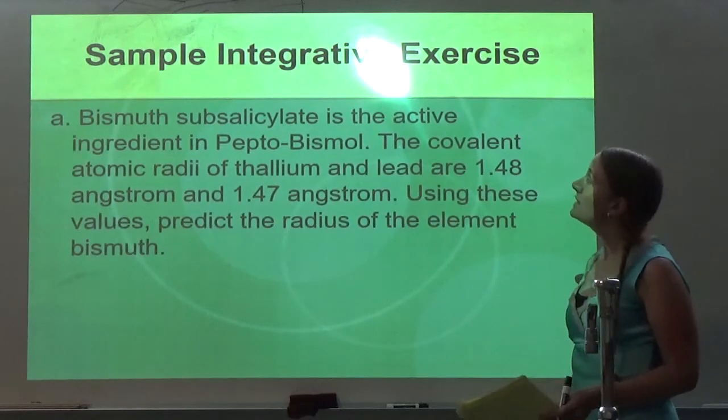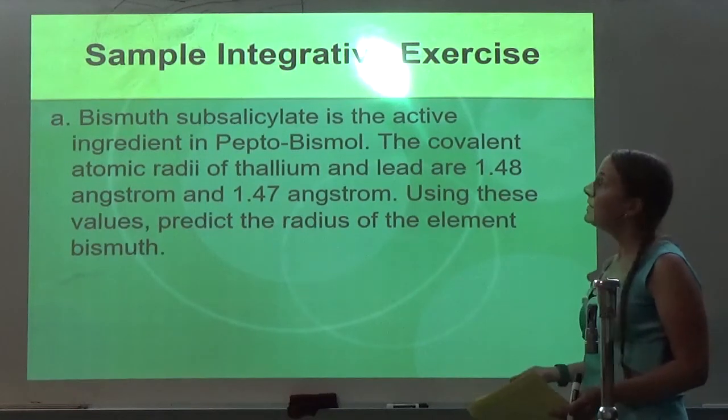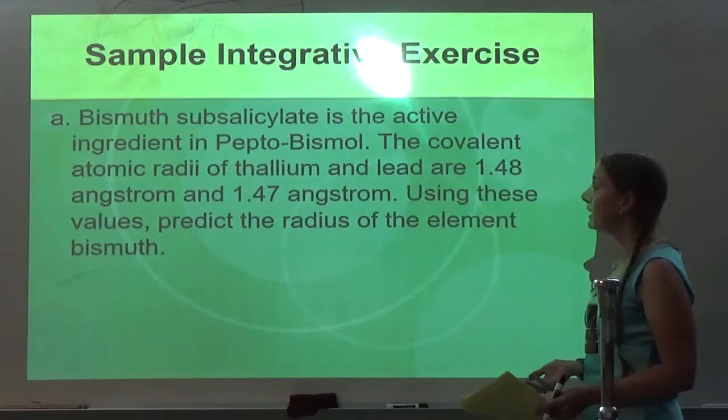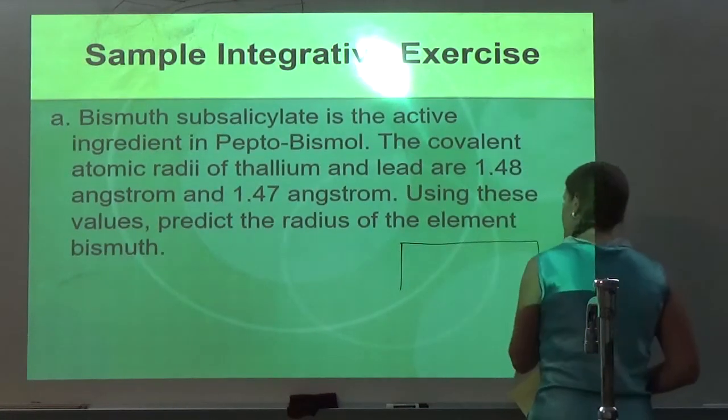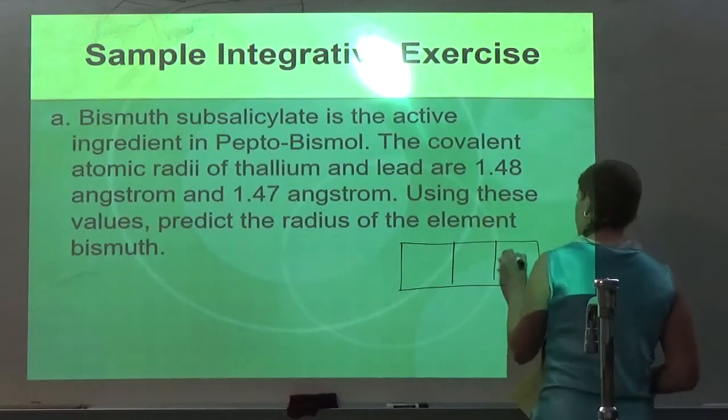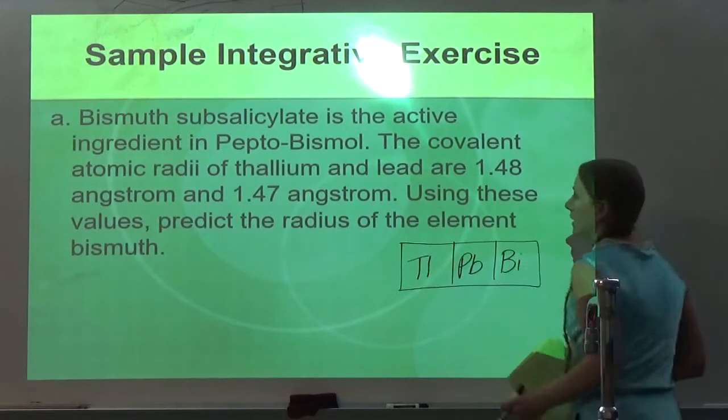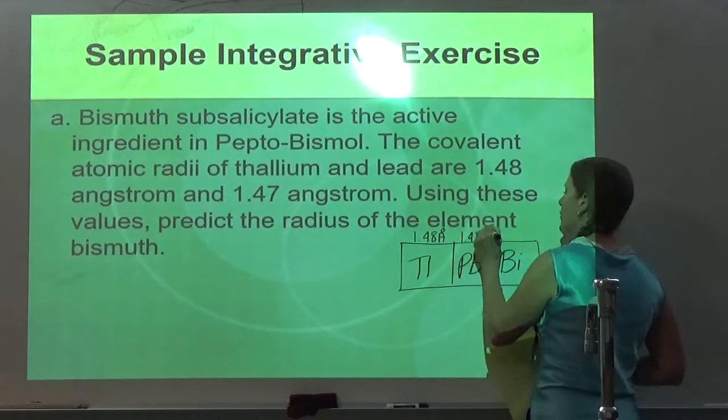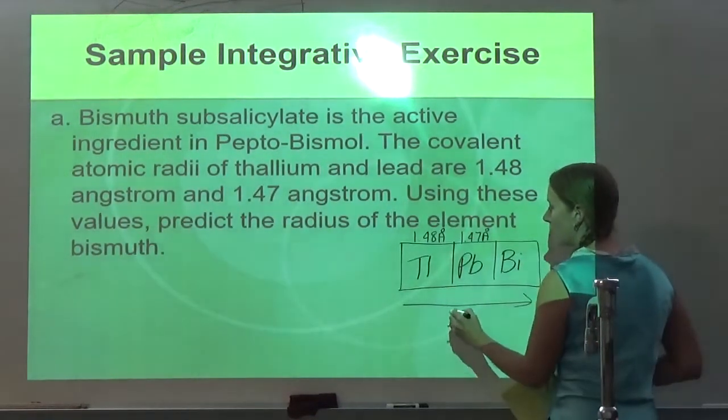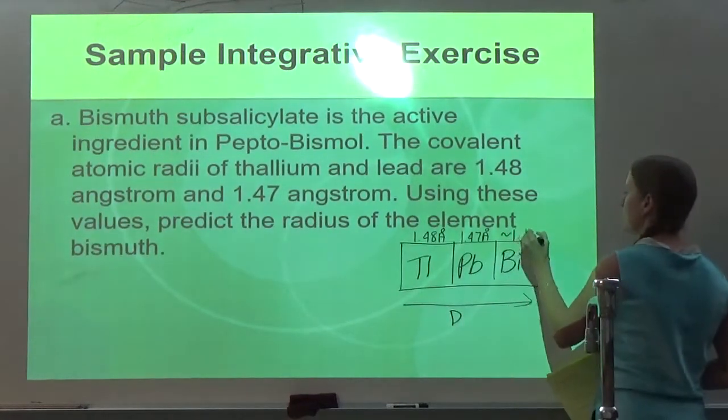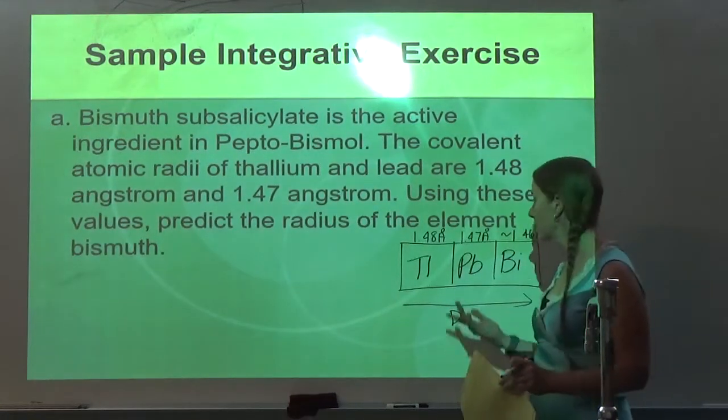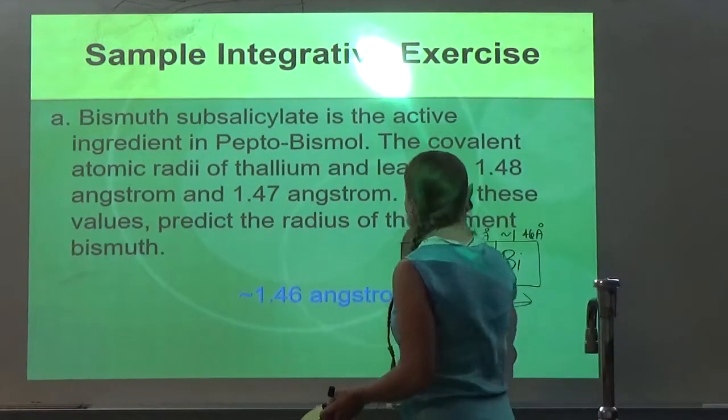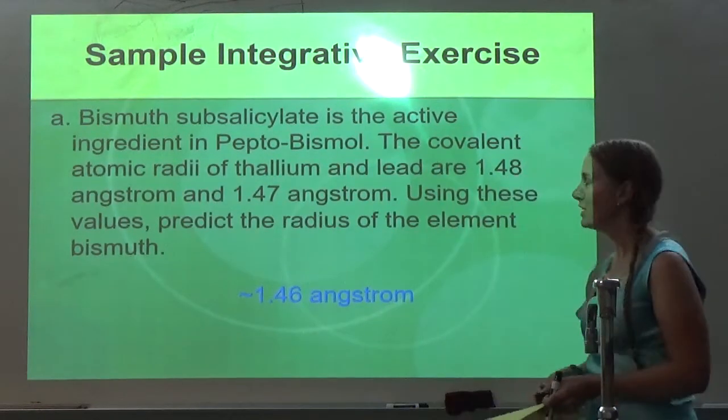It says, bismuth subsalicylate is the active ingredient in Pepto-Bismol. The covalent atomic radii of thallium and lead are 1.48 angstroms and 1.47 angstroms. Using these values predict the radius of the element bismuth. Well, if you look at the periodic table, this is the location of it. We have bismuth, we have lead, and we have thallium. It told me that thallium is 1.48 angstroms, lead is 1.47 angstroms. I know as I go across a period on the periodic table, atomic size decreases. So what would I guess? I would guess it's probably about 1.46 angstroms. That's what I would put for that one. You just have to measure trends for that. Nobody expects you to have the radius of bismuth memorized. Based on the numbers they give us, you should be able to figure out what it should be about.